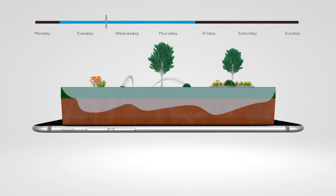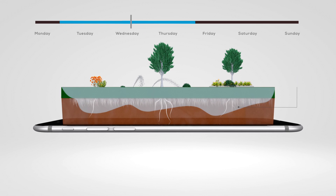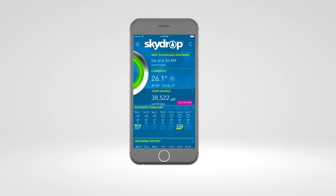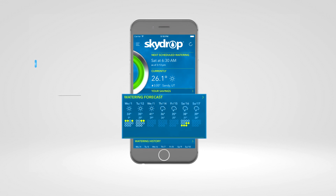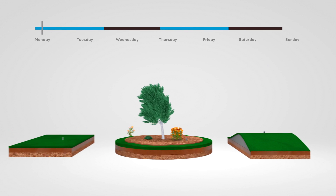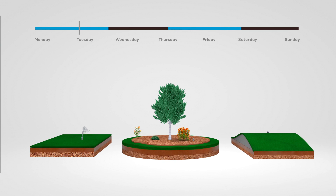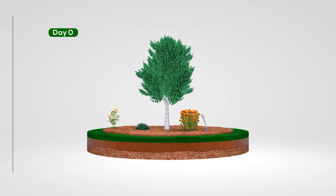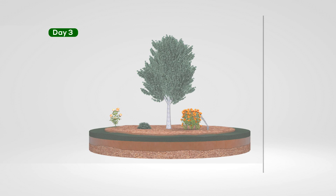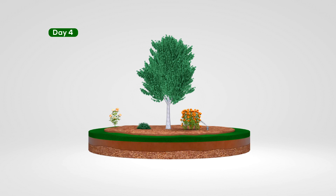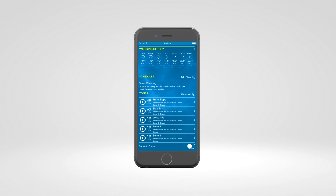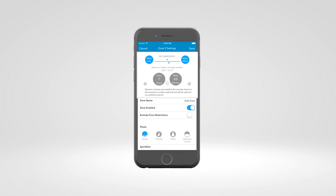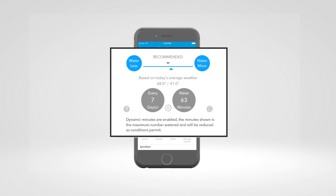SkyDrop knows that watering longer but less often promotes deeper root growth and will actually make your lawn healthier. The high-level summary screen will show you when SkyDrop is watering. Sometimes it may show watering consecutive days in a row. Remember that each zone is independent and all zones are not watering at the same time. Your landscape may go through a normal period of adjustment as it gets used to the smart method of watering. Once your landscape is adjusted, it's easy to make zone changes within the app or web account. Simply go into the zone in question and select the Water More or Water Less buttons to make adjustments.